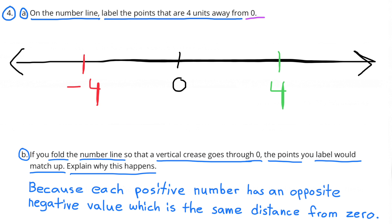Number 4 B. If you fold the number line so that a vertical crease goes through 0, the points you label would match up. Explain why this happens. Because each positive number has an opposite negative value which is the same distance from 0.